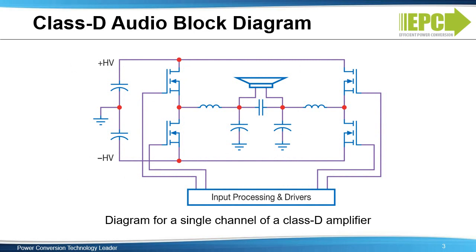Until recently, in order to achieve high-quality sound from an audio amplifier, thousands of dollars would have had to be spent on a large, heavy, power-hungry amplifier built with a Class A amplifier topology. A drawback is that Class A amplifiers operate as a constant power dissipator, with efficiencies in the 15% to 30% range. Class AB amplifiers increase efficiencies to 50% to 70%, but the sound quality is greatly degraded compared with Class A amplifiers.